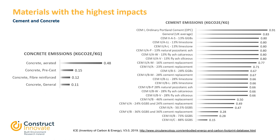This slide shows data from the Inventory of Carbon and Energy, or ICE. There are different emissions associated with different types of cement and cementitious material: CEM1, ordinary Portland cement, has 0.91 kg of CO2 equivalent per kg of cement, all the way down to CEM3C, which contains 88% GGBS, at 0.15 kg of CO2 equivalent per kg. For concrete, aerated concrete is 0.48 kg of CO2 per kg, precast concrete 0.15, and general concrete 0.11 kg of CO2 per kg.